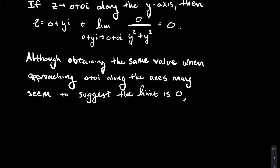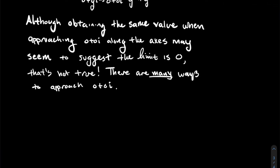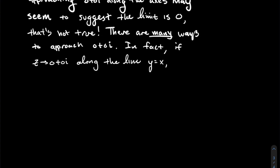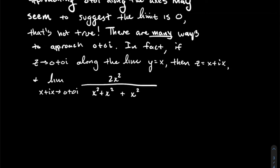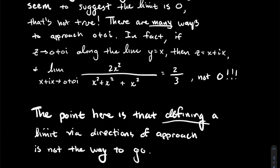Along both axes you get 0, and sometimes students think that's pretty powerful. But that doesn't actually suggest the actual limit is going to be 0 — checking the axes doesn't exhaust all possible directions that we could approach 0+0i from. In fact if you go along the line y=x, then z looks like x+ix, and if you substitute that in you get 2x squared over 3x squared, which is 2/3 — something that's not 0. So the point here is that trying to define a limit via directions is not a good way to go: you can't exhaust all possible directions.